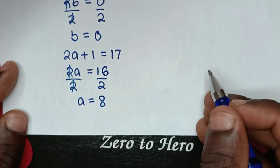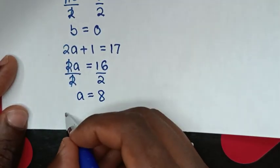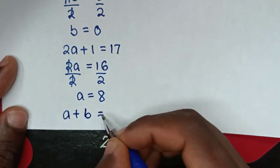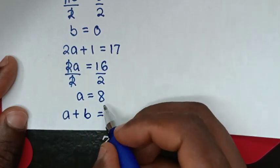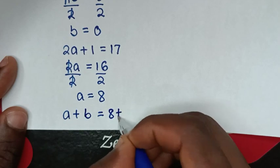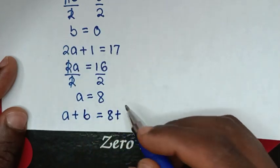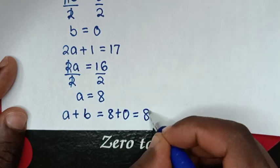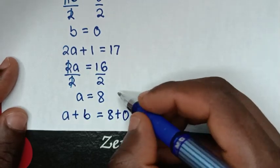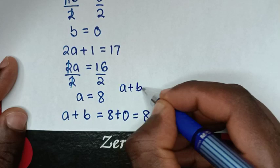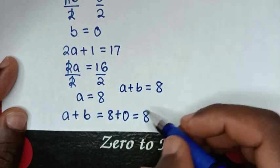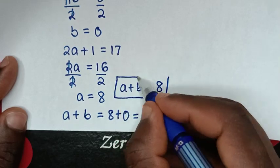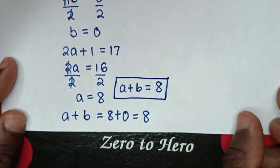Then from our problem, it's asking to find the value of a + b. So it will be equal to a = 8 plus b = 0, which equals 8 + 0 = 8. Therefore the value of a + b is equal to 8. This is the answer in Case 1, because we have 2 solutions.